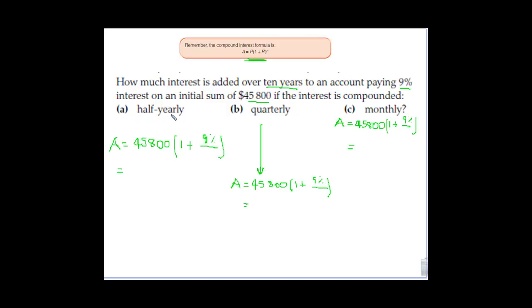So if it compounds half-yearly, basically what that means is if we've got 9% per annum interest, every half year would mean we'd have to divide our 9% by 2. But also that means instead of 10 times it would be compounded, it gets compounded 20 times.